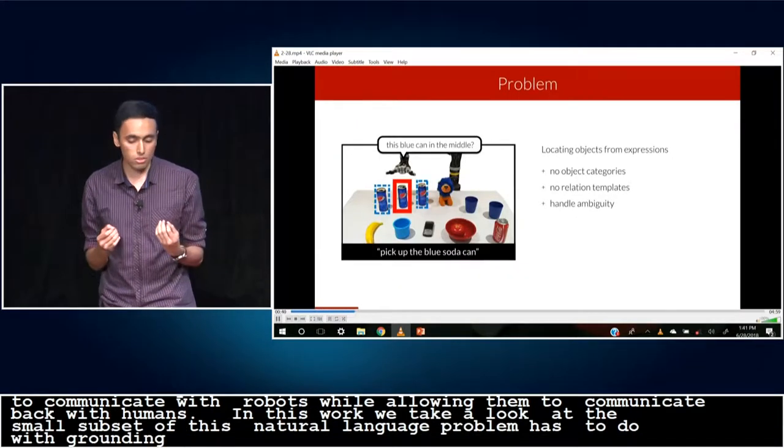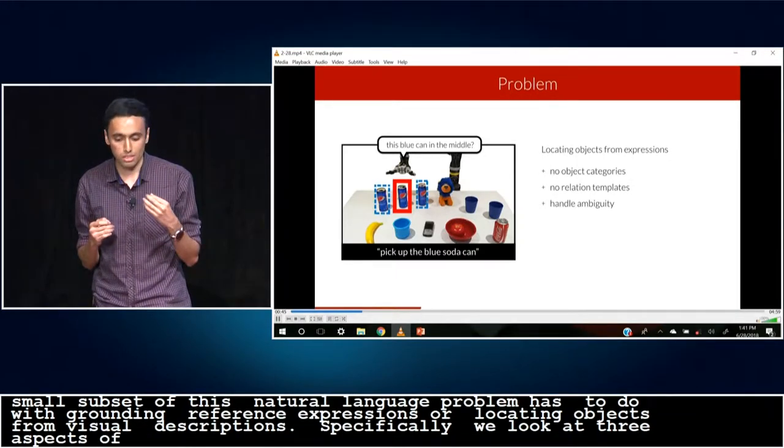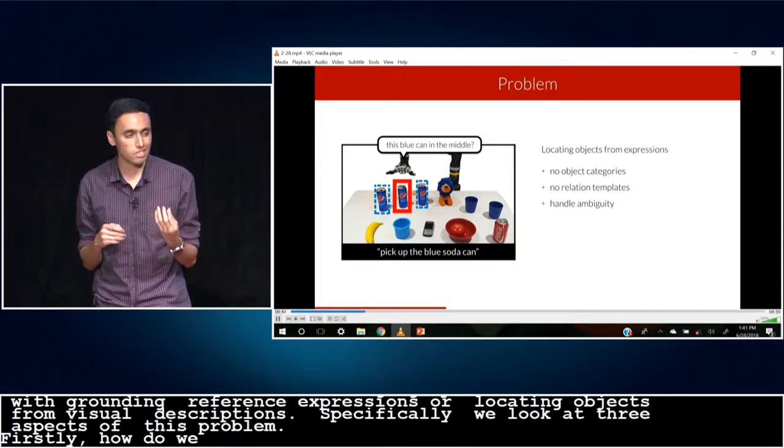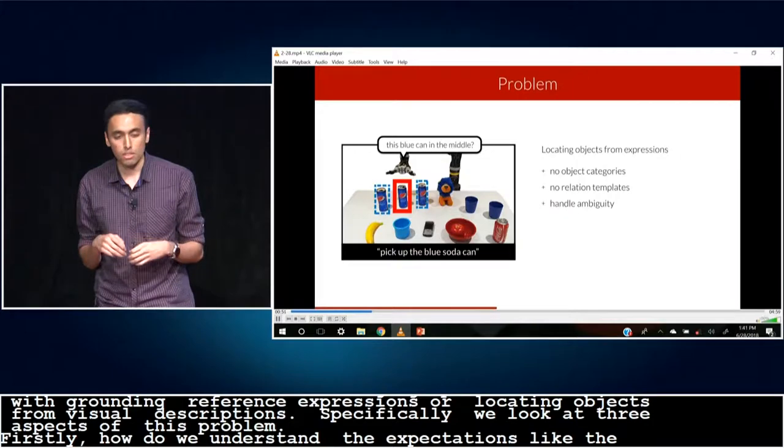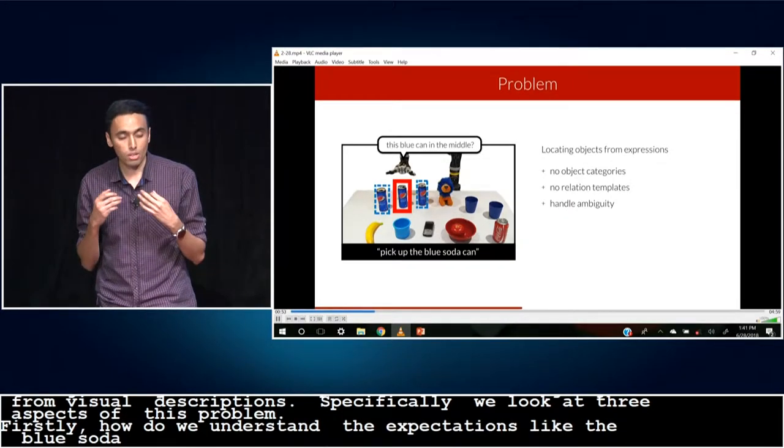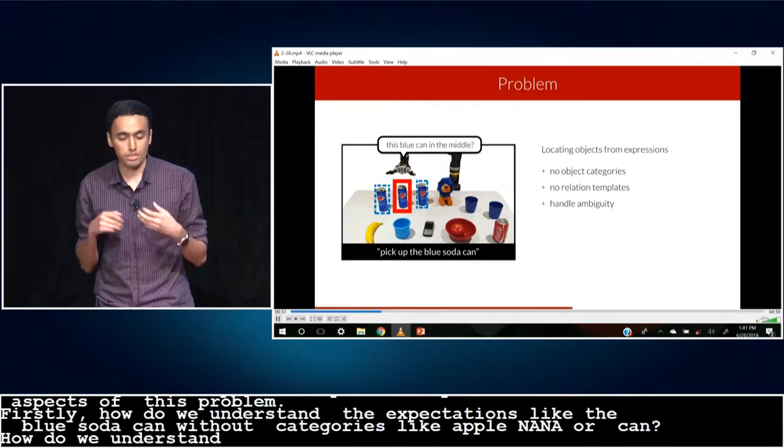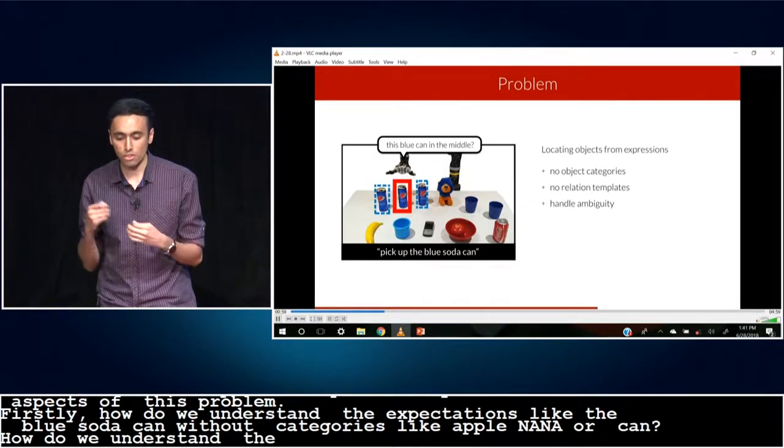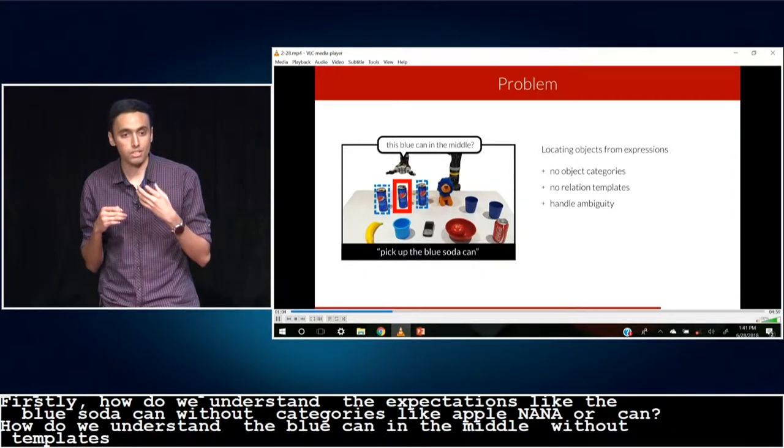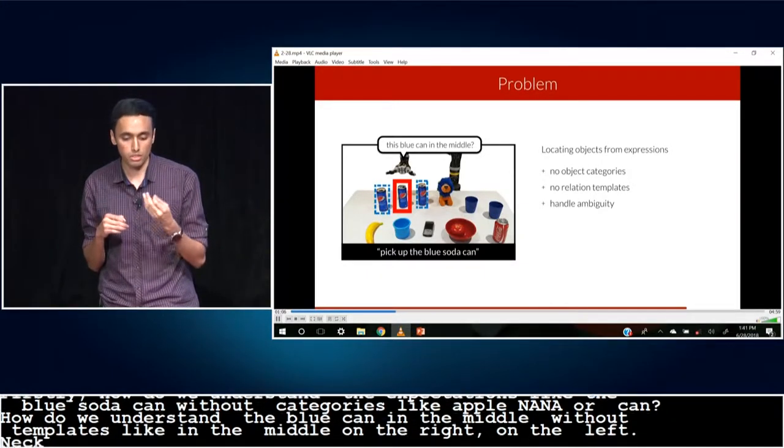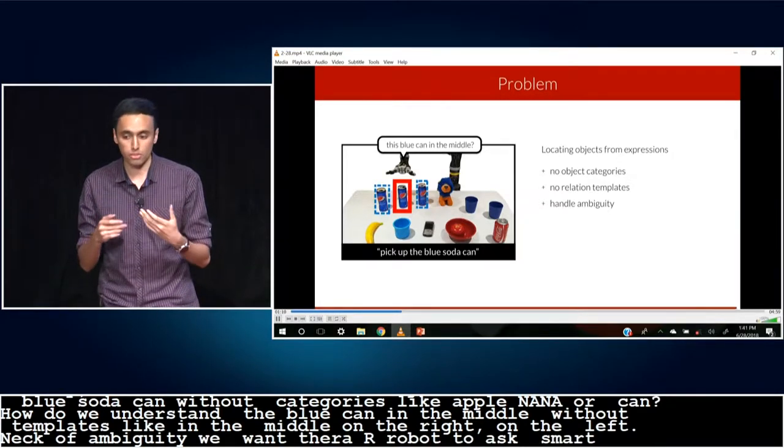And specifically, we take a look at three aspects of this problem. Firstly, how do we understand expressions like the blue soda can without explicitly defining object categories, like apple, banana, or can? Also, how do we understand relationships like the blue can in the middle without explicitly defining templates, like in the middle, on the left, on the right? And finally, in the case of ambiguity, we want the robot to ask smart questions, like do you mean this blue can in the middle? And this allows us to solicit additional information from the user.